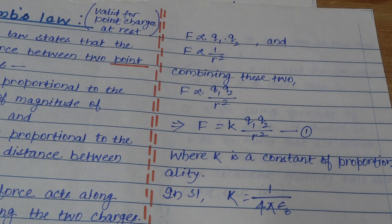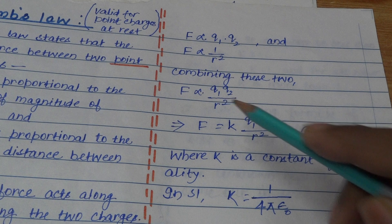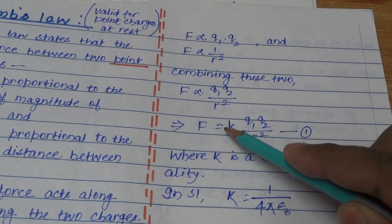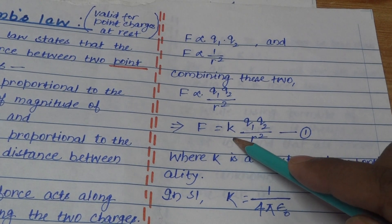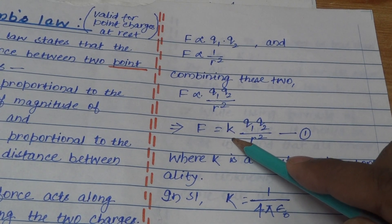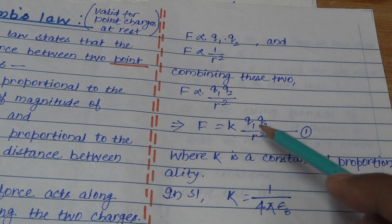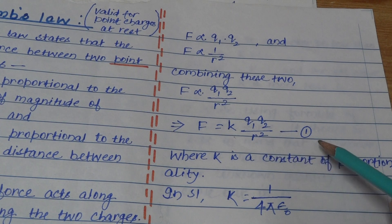When we combine these two proportionalities, we get F varies as Q1 Q2 divided by R squared. If we want to replace this proportionality with equality, we need to introduce a constant K. So the equation becomes F = K Q1 Q2 divided by R squared. This is Equation 1.